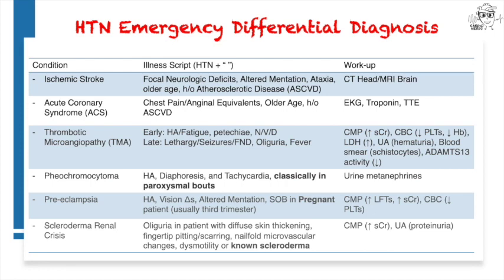Pheochromocytoma occurs classically as paroxysmal bouts of hypertension with headache, diaphoresis, and tachycardia, reflective of a paroxysmal catecholaminergic state. You can measure with urine metanephrines.